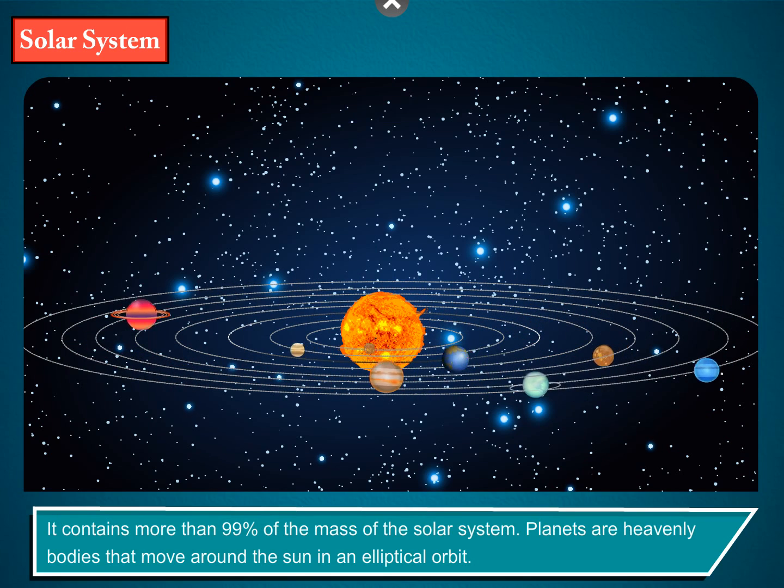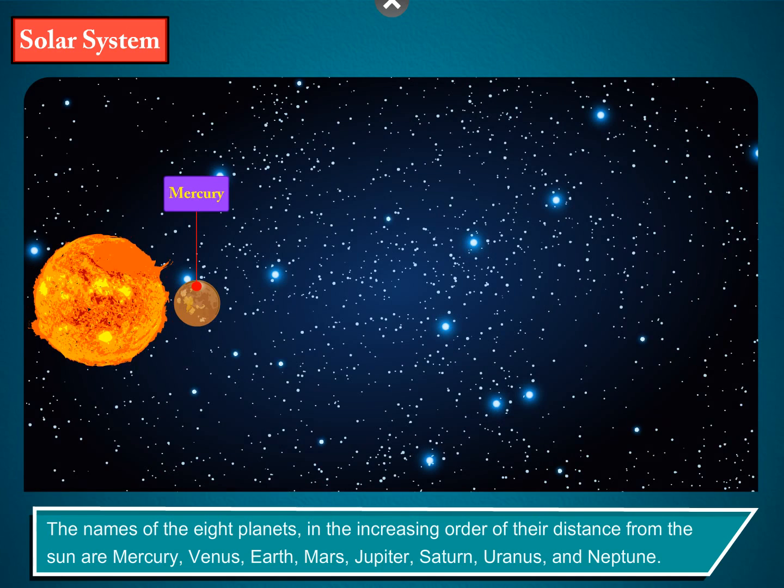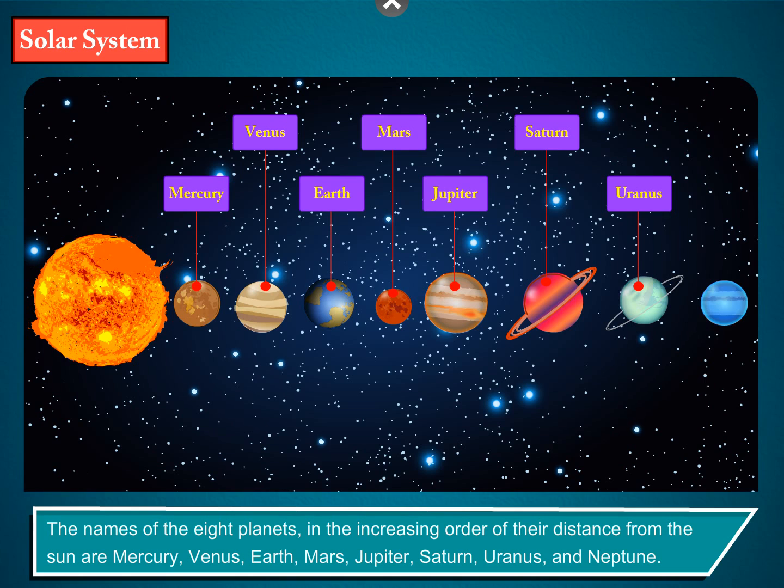Planets are heavenly bodies that move around the sun in an elliptical orbit. The names of the eight planets, in increasing order of their distance from the sun, are Mercury, Venus, Earth, Mars, Jupiter, Saturn, Uranus, and Neptune.